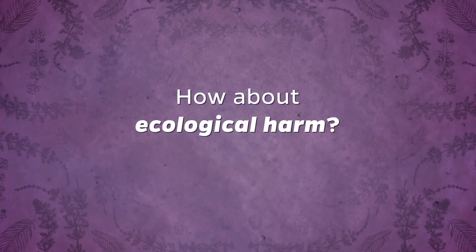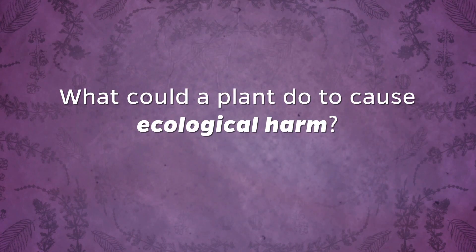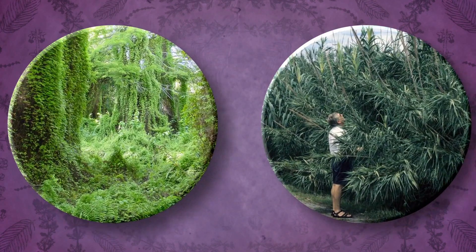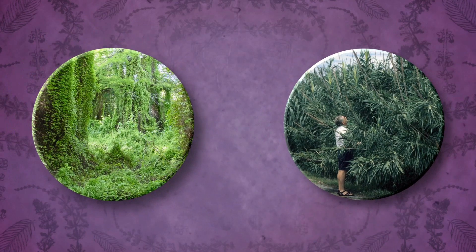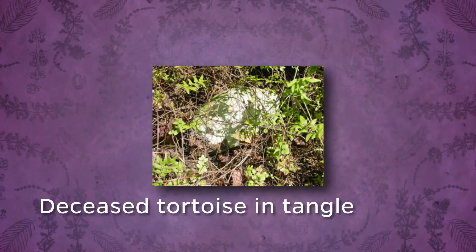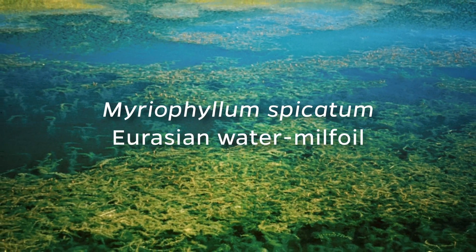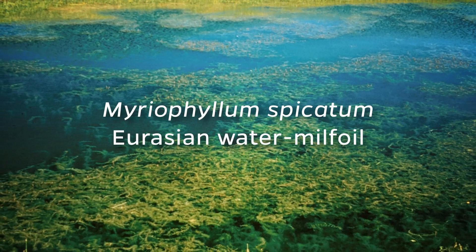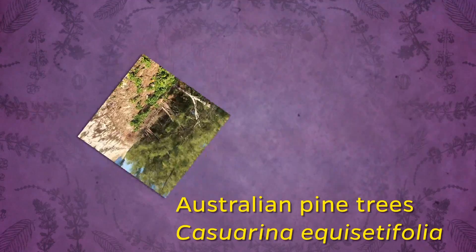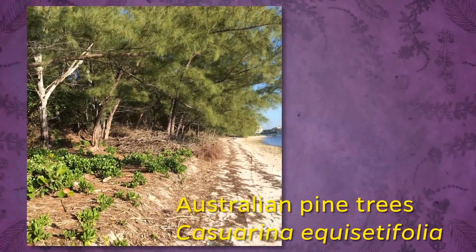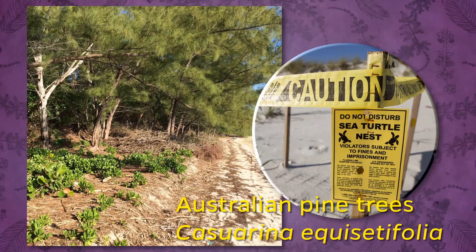How about ecological harm? What could a plant do to cause ecological harm? Invasive plants can take over and displace native plants. Animals that depend on native plants are often unable to adapt once the invasive plant takes over, so they leave the area or die off. Invasive plants can cover up wildlife nesting areas, preventing these animals from reproducing. Australian pine trees were introduced to Florida to use for lumber. Mostly found on Florida coasts, Australian pine growth can interfere with the nesting of endangered sea turtles and the American crocodile.